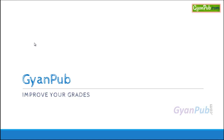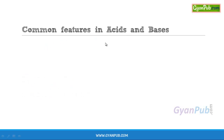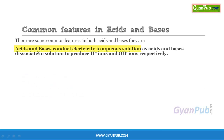Now, let us discuss the common features between acids and bases. We know that acids and bases have different properties, but they also have some common features. The first common feature is that acids and bases conduct electricity in aqueous solution, as acids and bases dissociate in solution to produce H+ ions and OH- ions respectively.